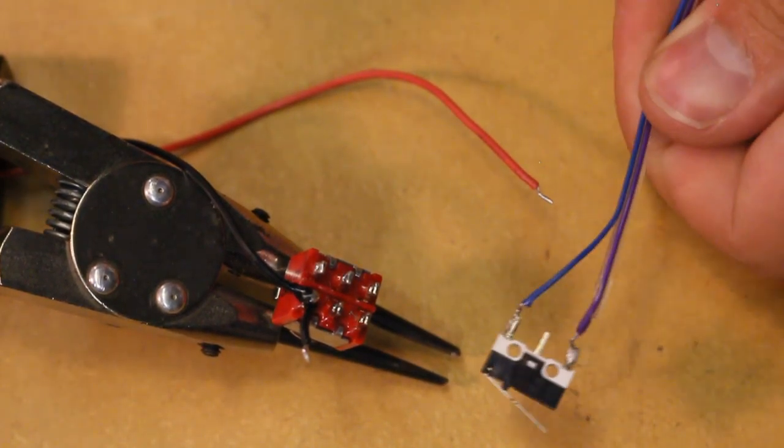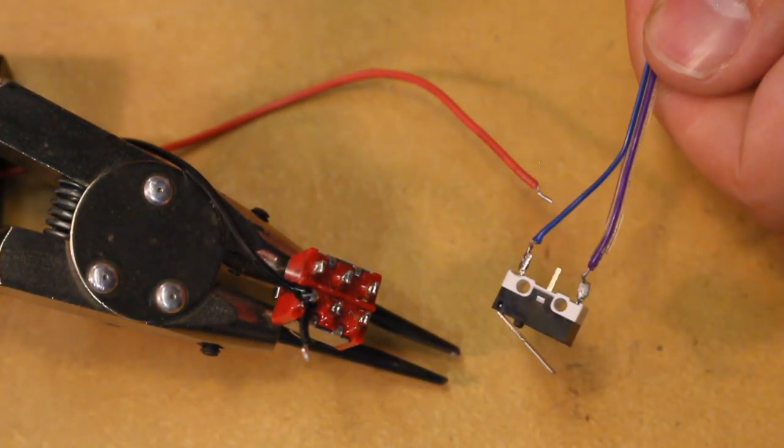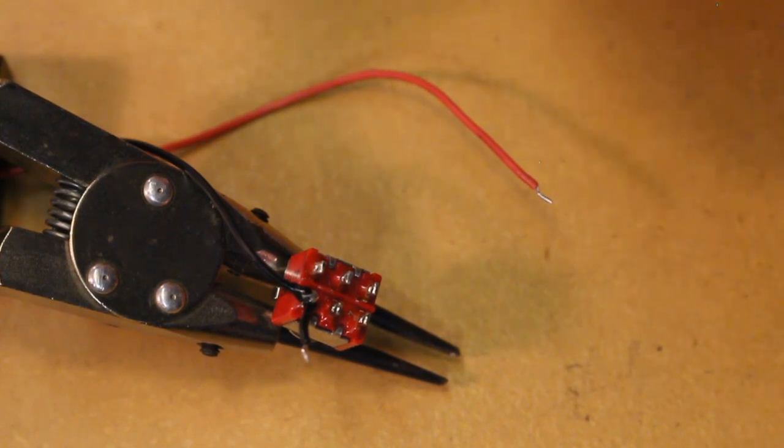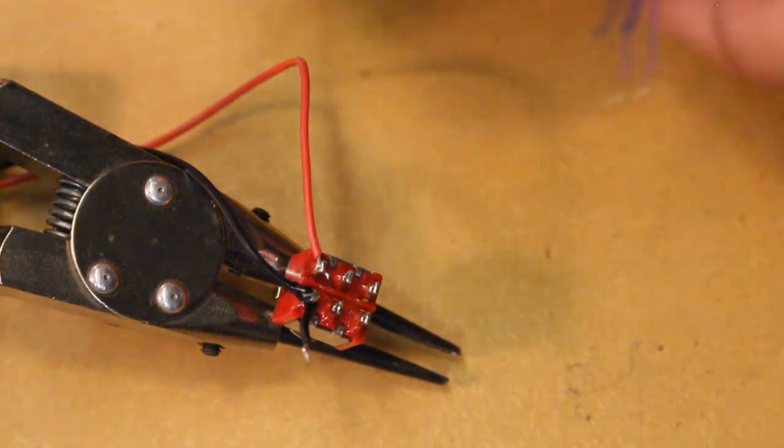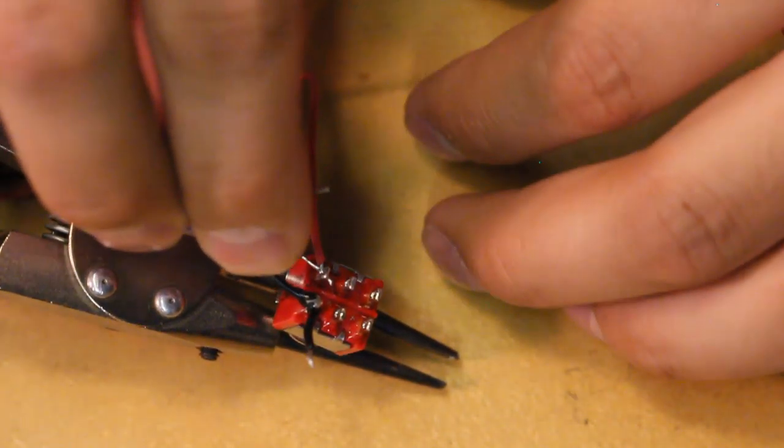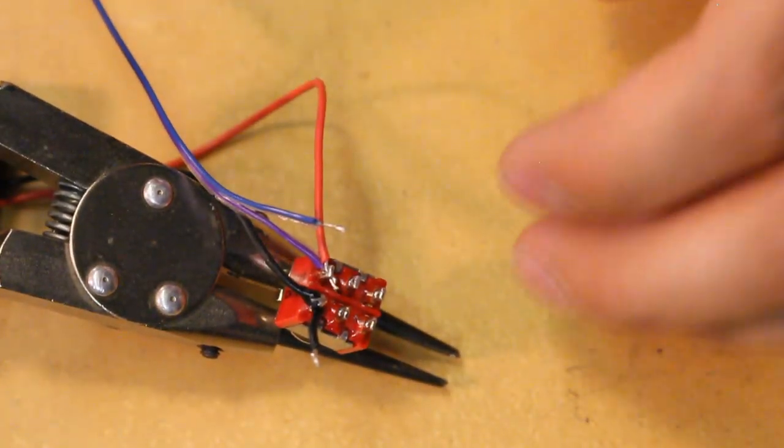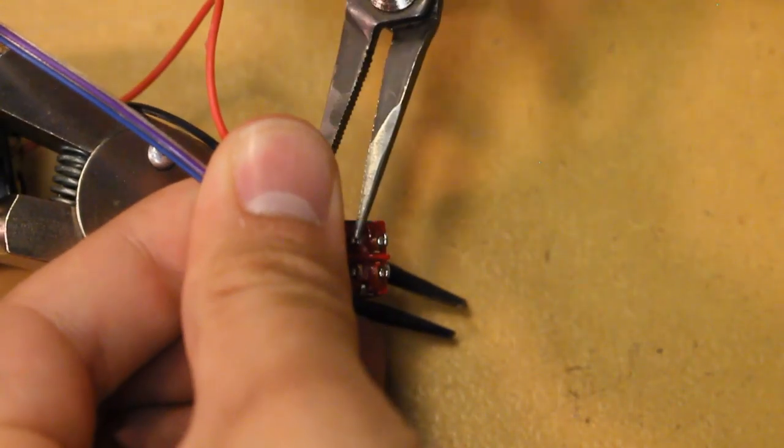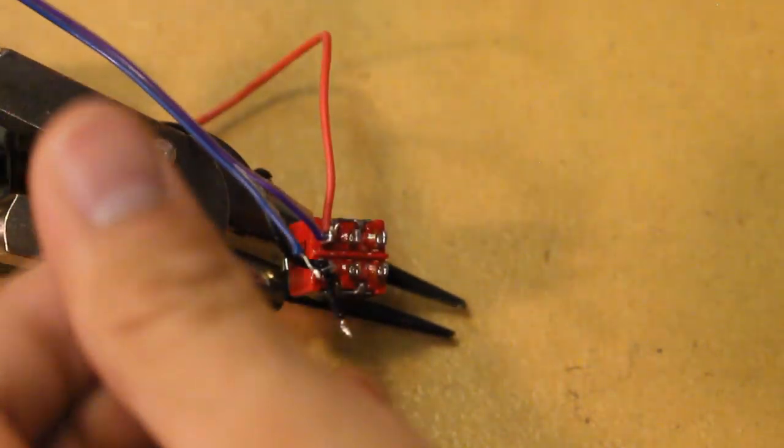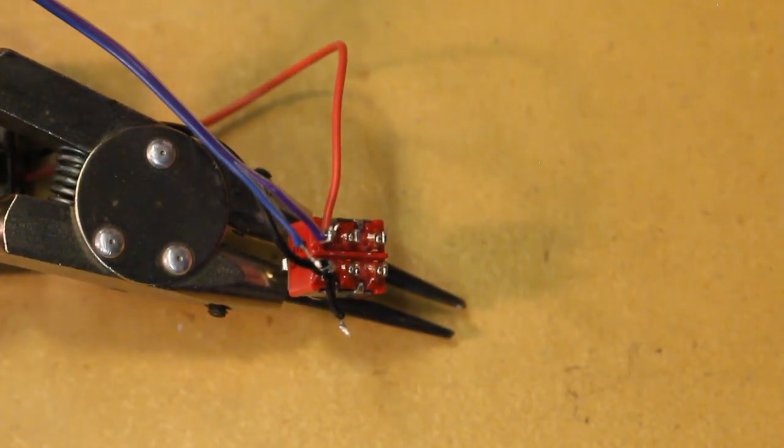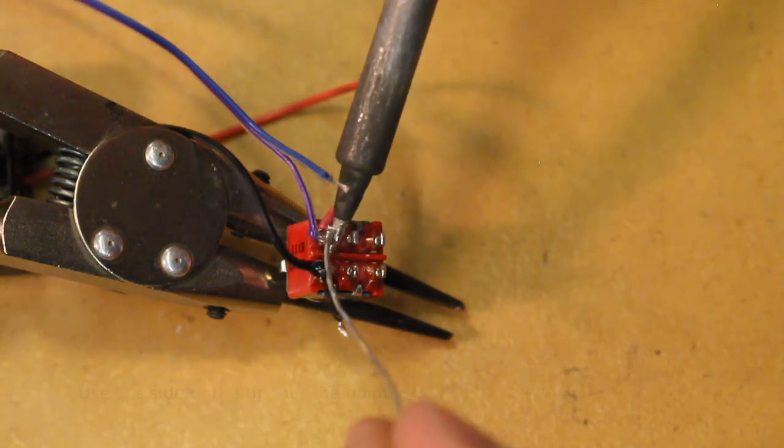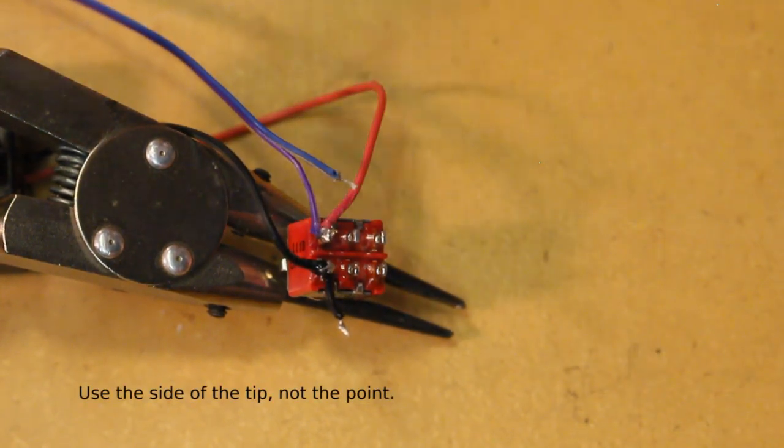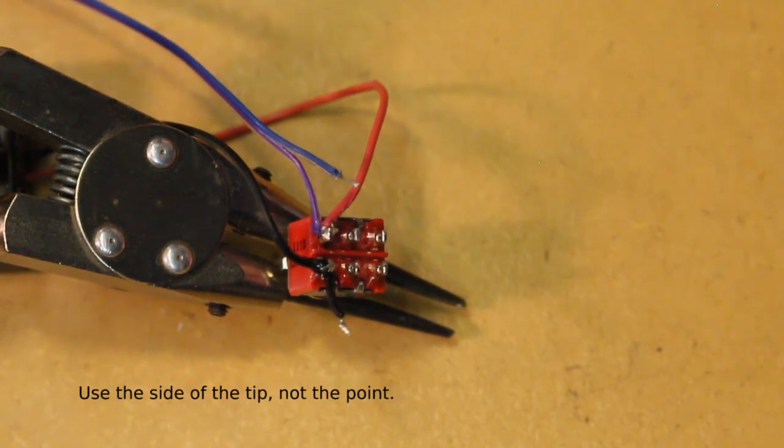Okay, so we've prepped our switch here and soldered on some connections, and now let's solder it onto the toggle switch. So we'll take our positive lead of our battery and then one side of the switch, put those both in, and then hold onto the wires here, bend them up so they stay in place, and then we'll solder it together.